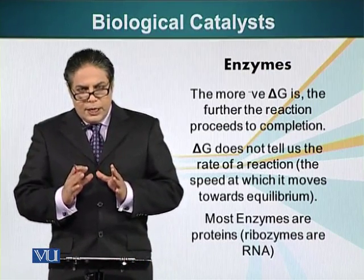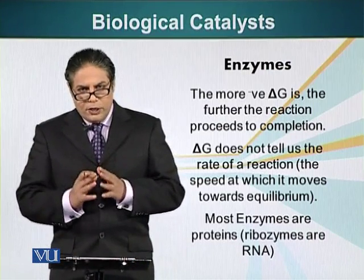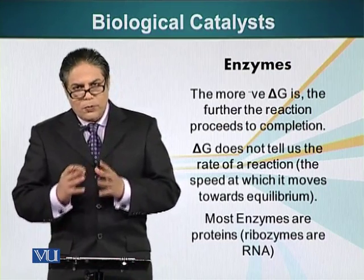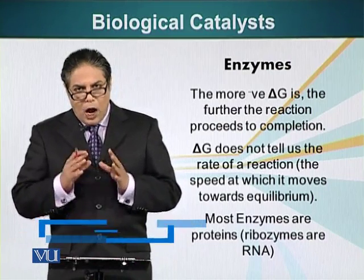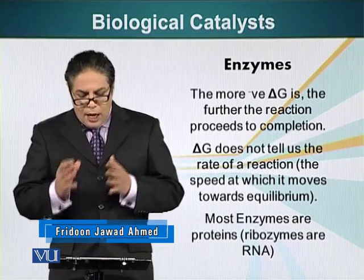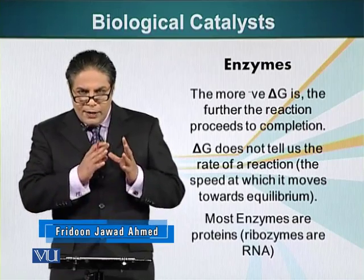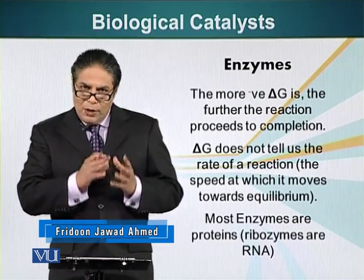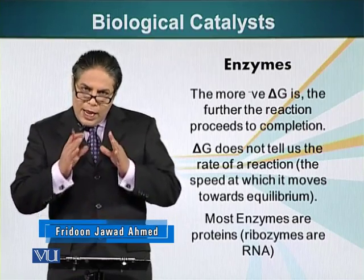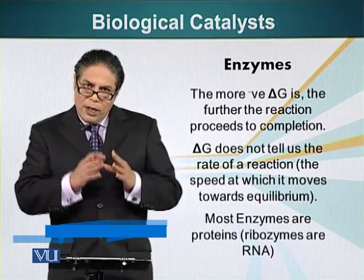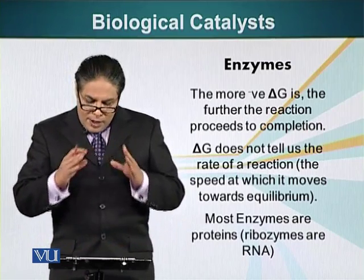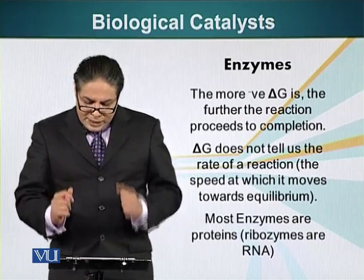Delta G — change in free energy — does not tell us about the speed of a reaction: how quickly a reaction will proceed, how quickly the reactants will be converted into products. Delta G just tells us about the equilibrium point of the reaction.